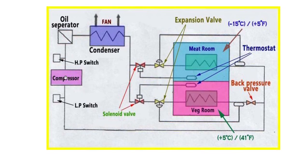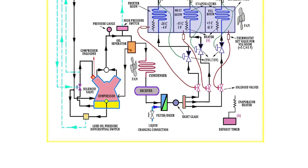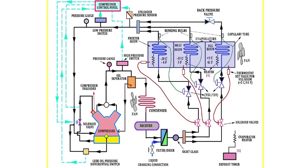Here is one more block diagram: compressor with LP and HP cutouts, oil separator, condenser with fans, and then the meat room and veg room each with expansion valves and solenoids. The sensing bulb controls the TXV. The back pressure valve is present only on the veg room side, not the meat room, because pressure is higher in the meat room and lower in the veg room due to the higher set temperature — plus 5 versus minus 15 degrees. This diagram is very important and surveyors may ask you to draw it. Thank you for your valuable time.